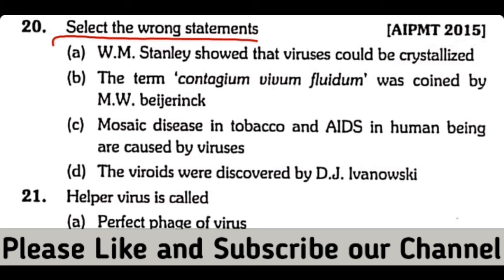Question number 20. The term contagium vivum fluidum was coined by M.W.B. So the correct answer is option C. Mosaic disease in tobacco and AIDS in human beings are caused by viruses — this statement is true. Viroids were discovered by D.J. Aimanos — this statement is incorrect. So the correct answer is option D.